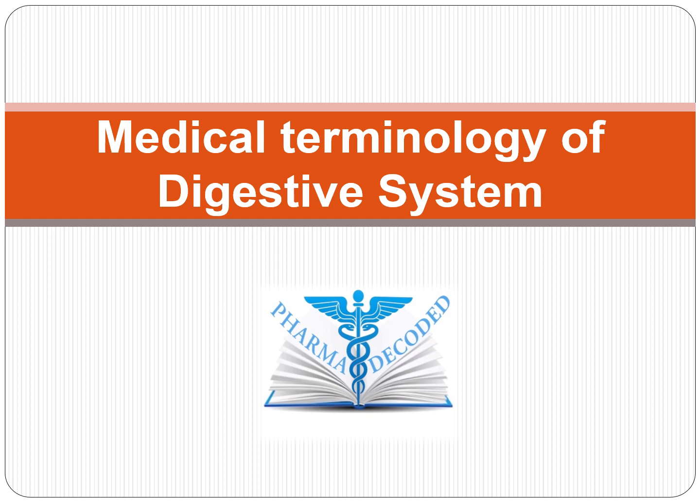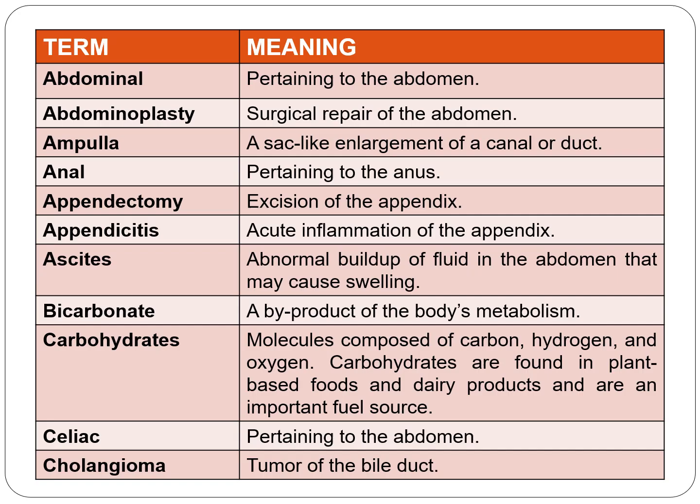Hello everyone, now let us discuss medical terminology of the digestive system. The first term is abdominal, pertaining to the abdomen. Abdominoplasty — 'oplasty' means surgical repair — so abdominoplasty is the surgical repair of the abdomen.